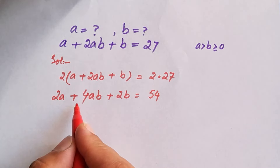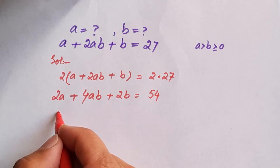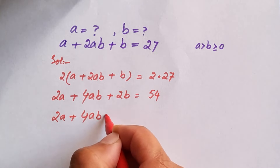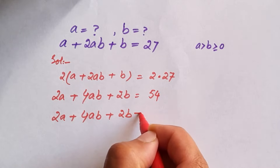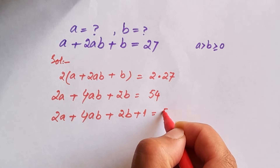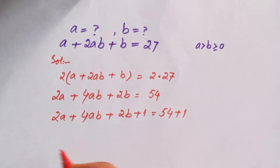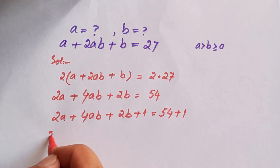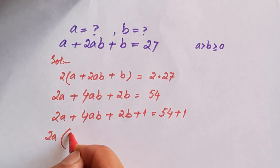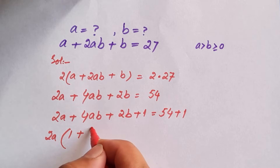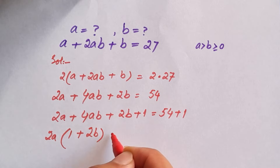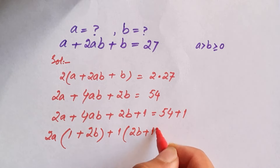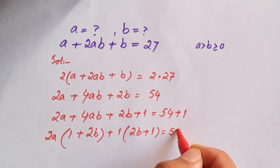If we add 1 on both sides of this equation, we get 2a plus 4ab plus 2b plus 1 is equal to 54 plus 1. We can take 2a as common from the first two terms, so inside the bracket we have 1 plus 2b, and 2b plus 1 as a common factor.